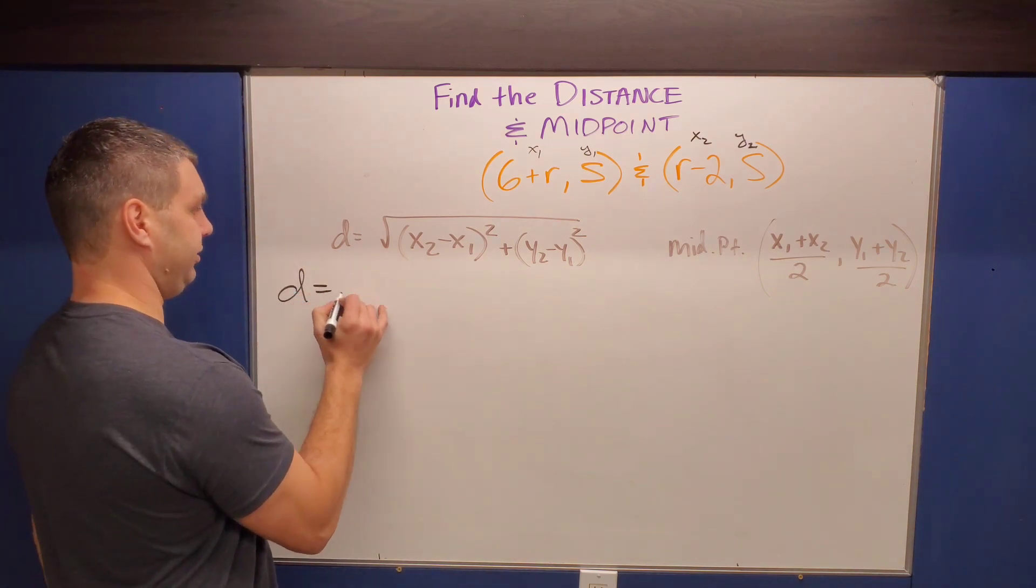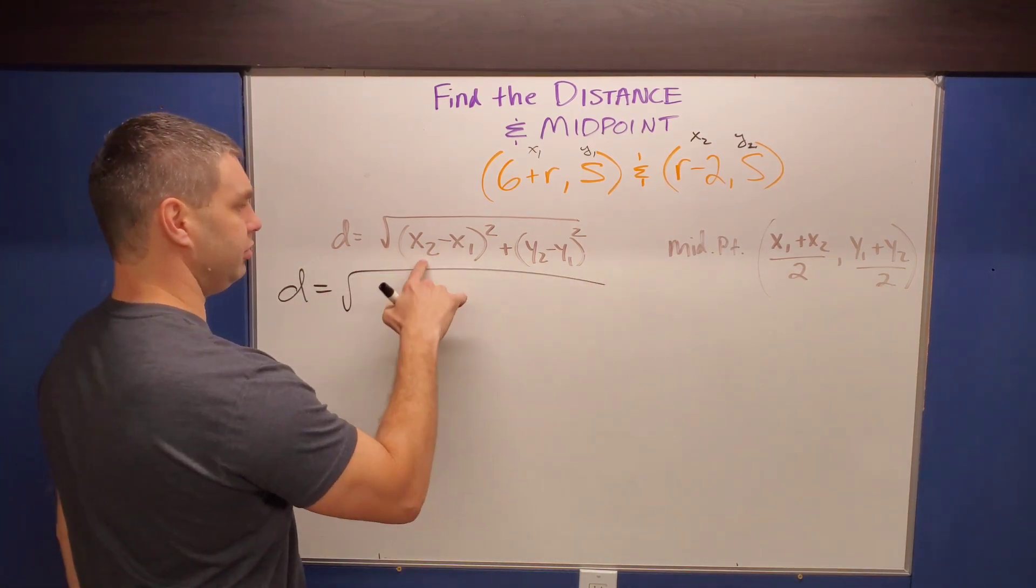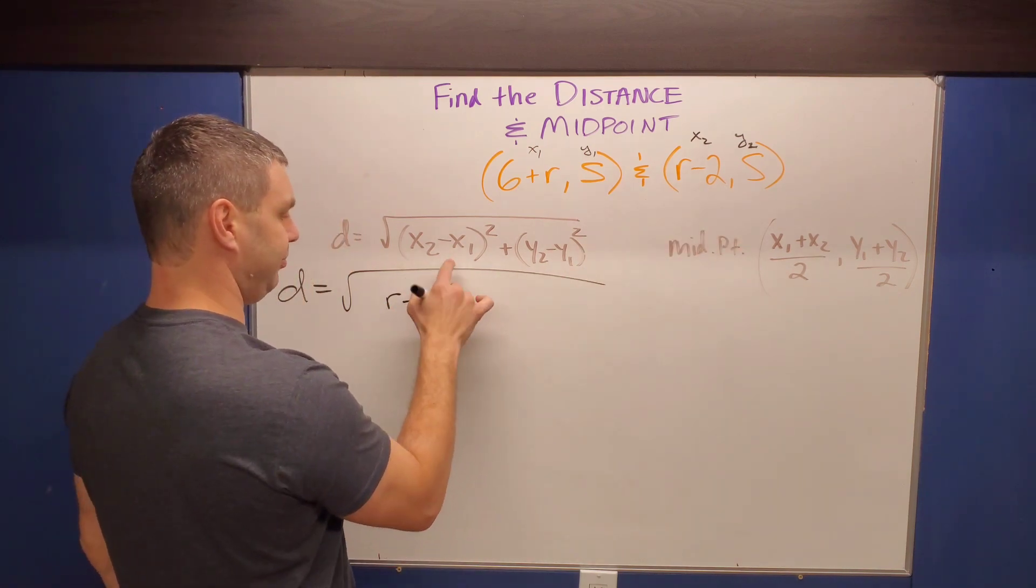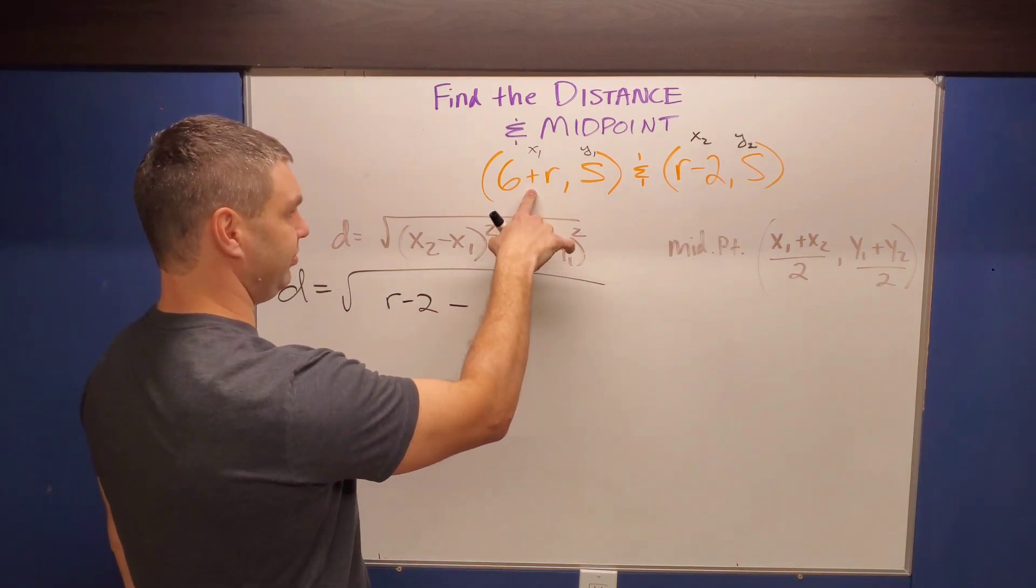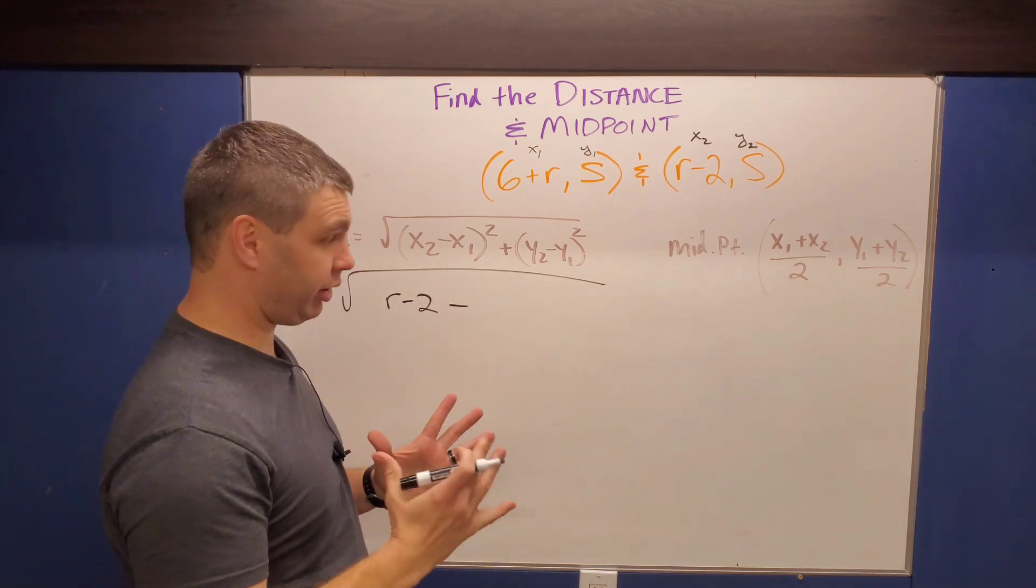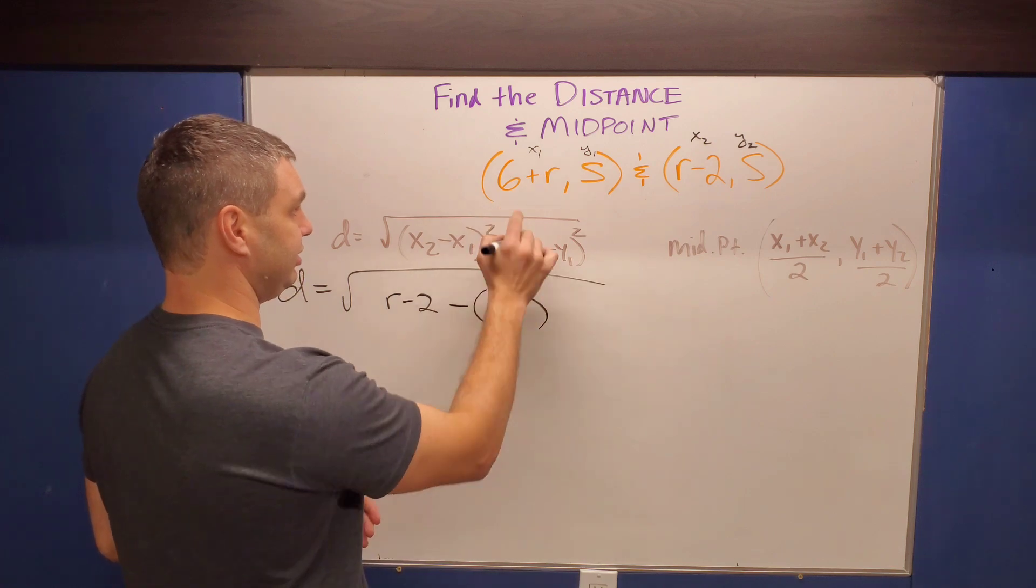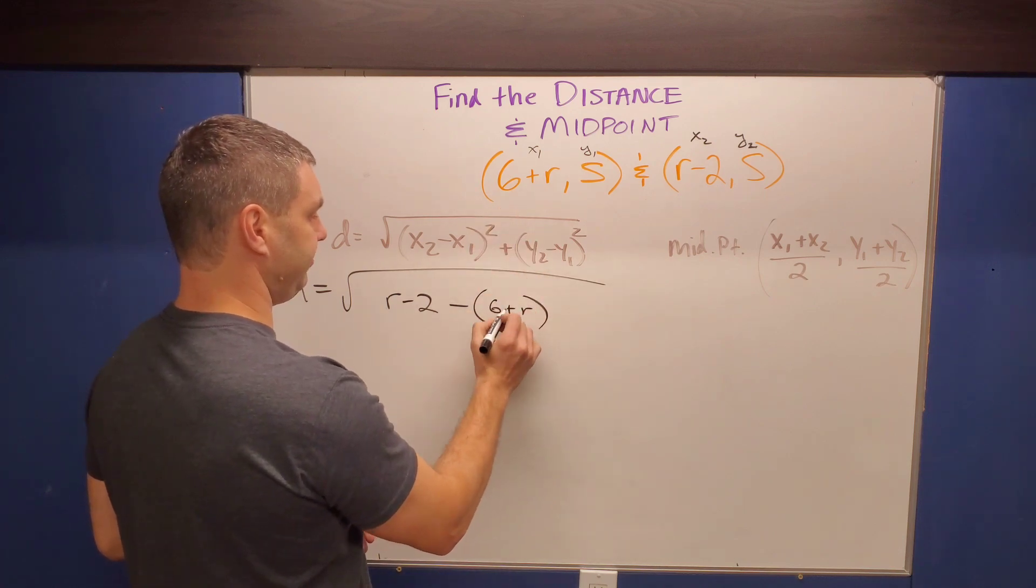If I put it into the distance formula, remember over here, X two is going to be R minus two, R minus two. And then it's minus the X one. Now this is another area where you might run into trouble because we have to subtract all of it, meaning it's going to be in parentheses, which is six plus R.